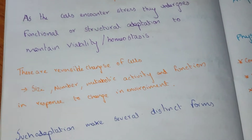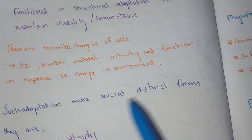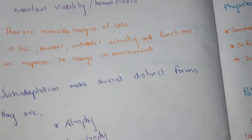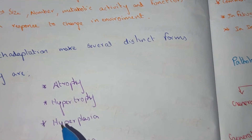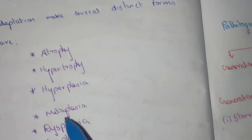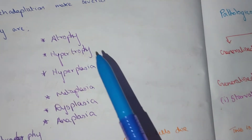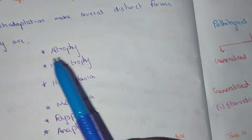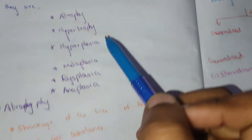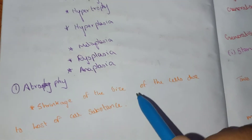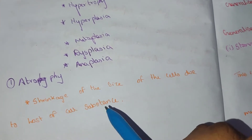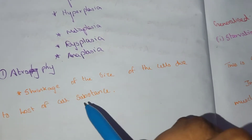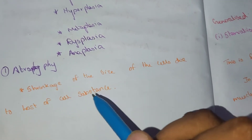Such adaptation takes several distinct forms. One form of cellular adaptation is atrophy — the shrinkage of the cell due to loss of cell substance, resulting in a smaller cell.